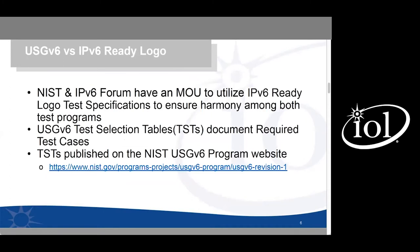We get a lot of questions about how the requirements differ between IPv6 Ready Logo and USGv6. When possible, the two test programs share the same test specifications to make it easier to test for both programs at the same time. Ready Logo requires a 100% pass rate with the exception of advanced functionality test cases. For USGv6, the easiest way to understand what's required is to reference the test selection tables on the NIST website, and we will share the slides so you can access that link later.